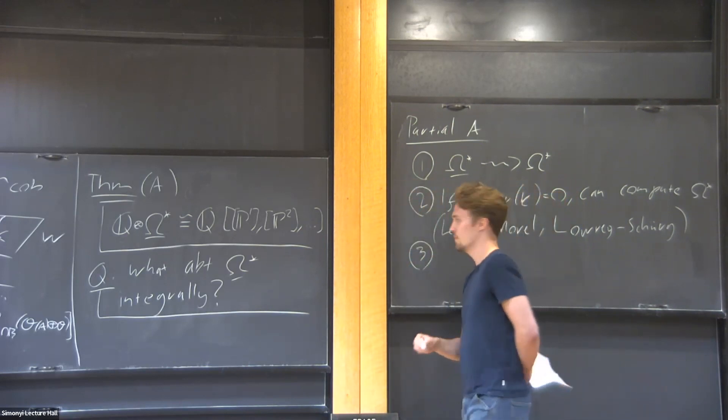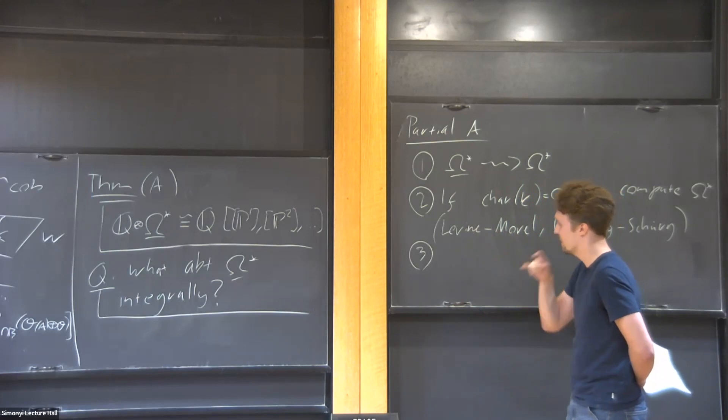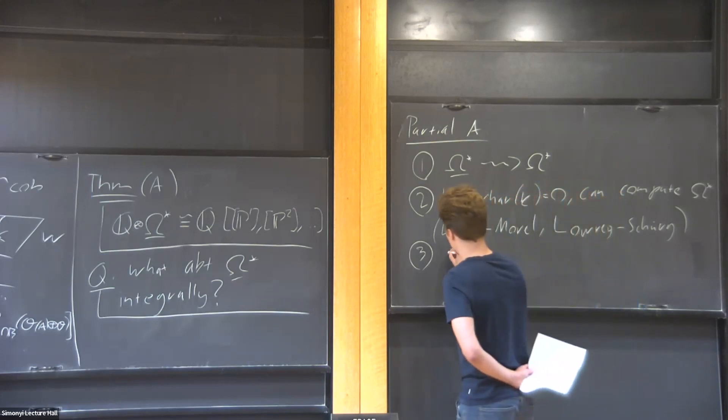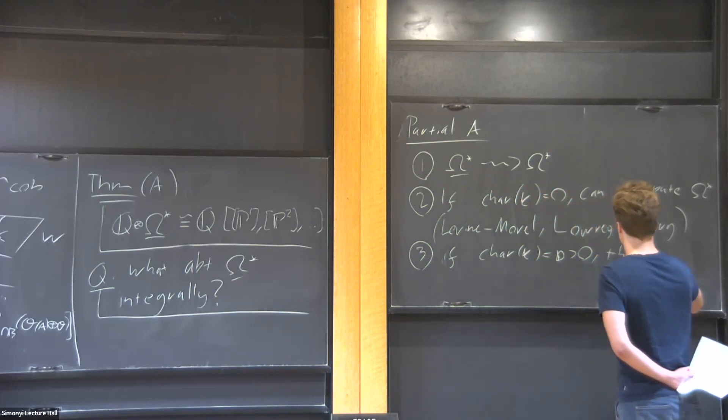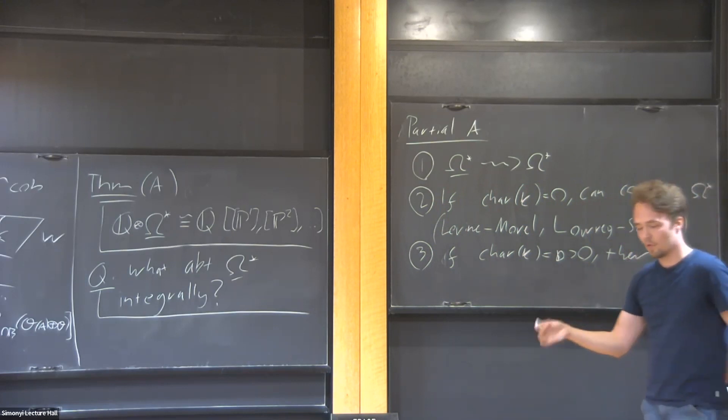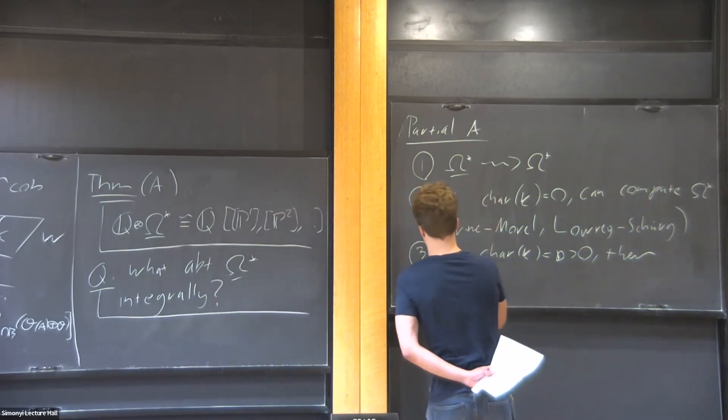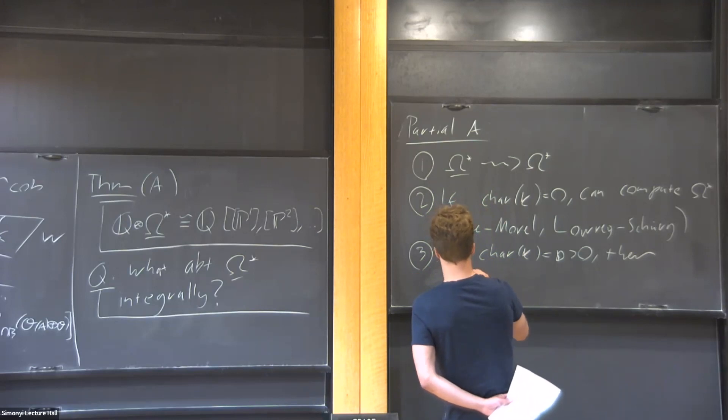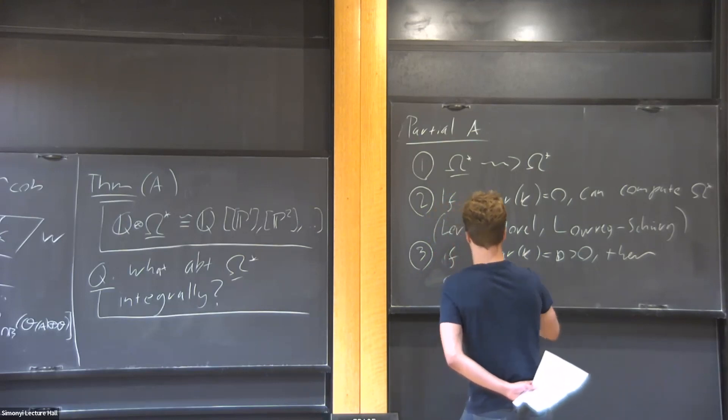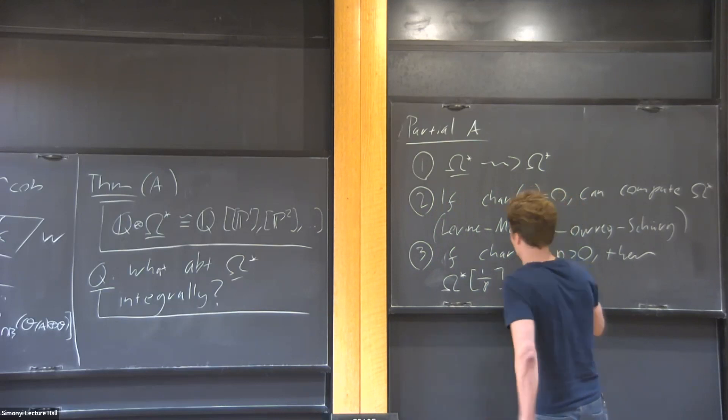The partial progress I do in non-zero characteristic is: if the characteristic of k is p rather than zero, then every quasi-smooth variety is cobordant to a regular variety, meaning like a smooth variety basically, after you invert the coefficients. If you don't invert anything, I don't know, I can't do anything.